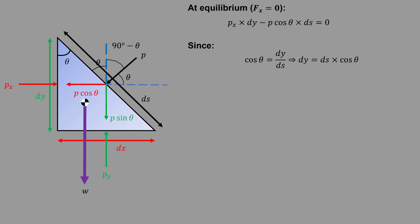hence dy equals ds cos theta. Substituting these values, the equation will finally be Px dy minus P dy equals 0. Finally, P equals Px.